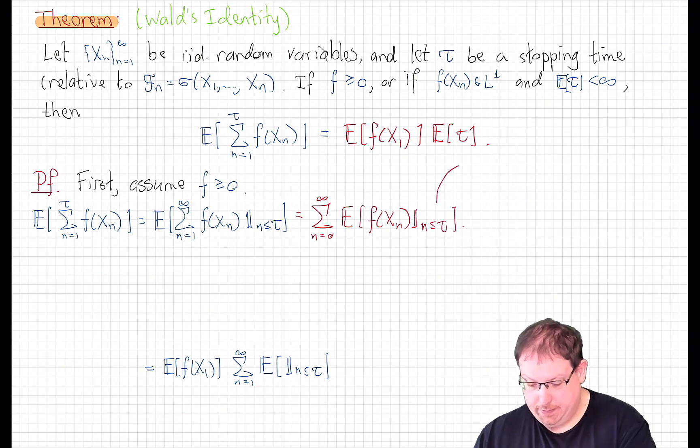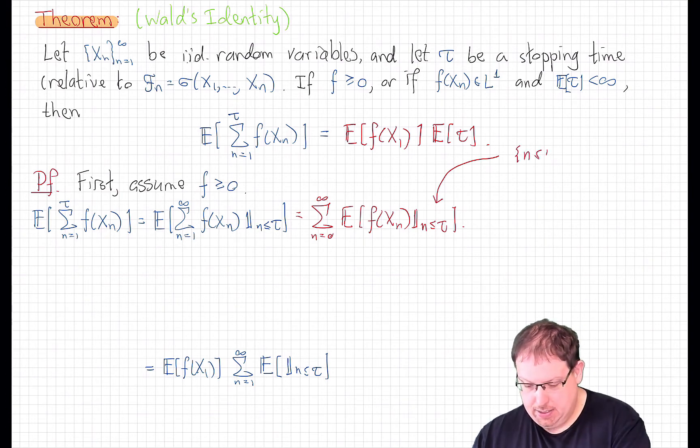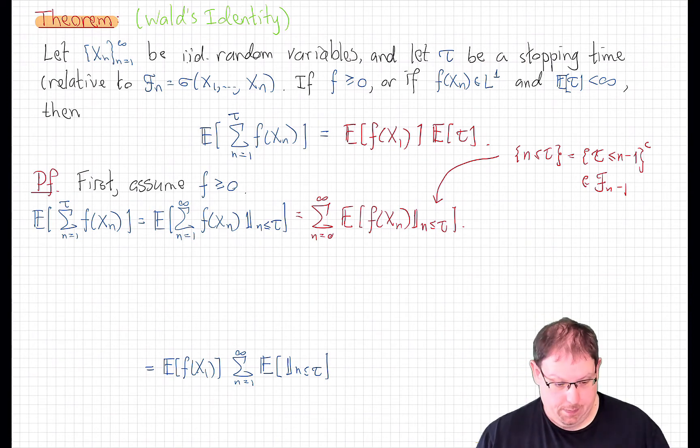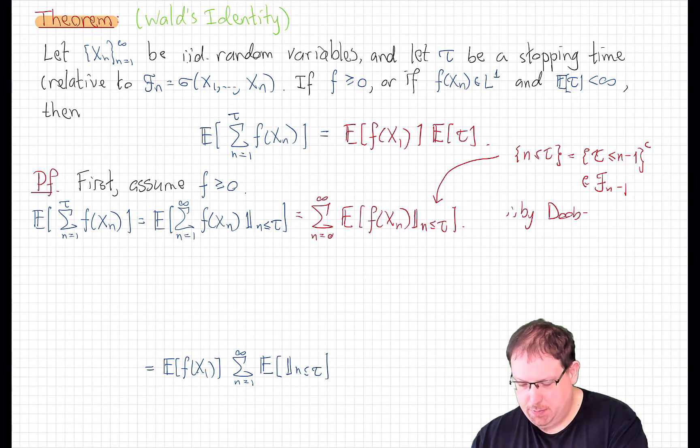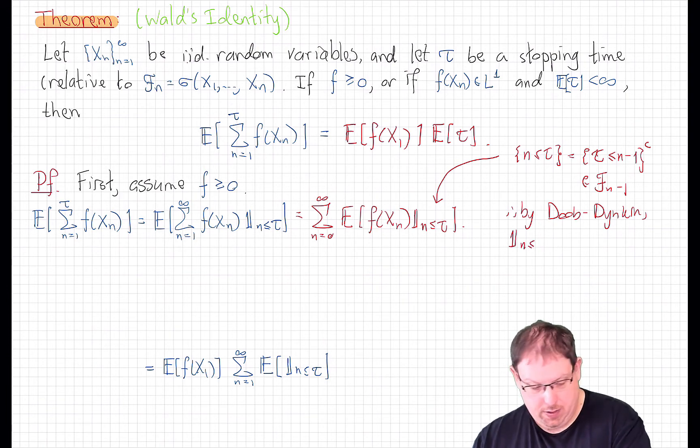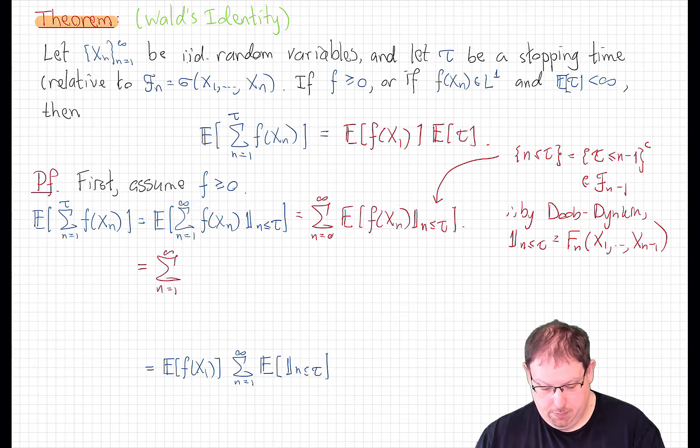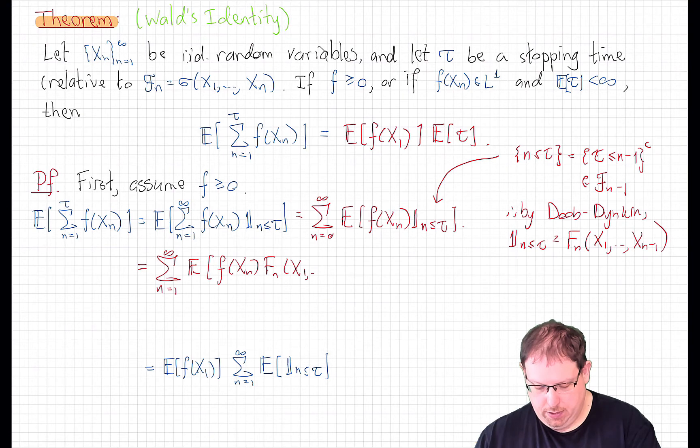Now to analyze that, we note the following. The event that n is less than or equal to tau is the complement of the event that tau is less than n, which is the event that tau is less than or equal to n minus 1. And that is in the sigma field F n minus 1. So therefore, by the Dube-Dinkin representation, there exists some function Fn, so that that indicator function is this Borel measurable function Fn of the random variables x1 through xn minus 1. So that means this expectation can be written as the sum n going from 1 up to infinity of the expected value of little f at xn times capital Fn of x1 through xn minus 1.